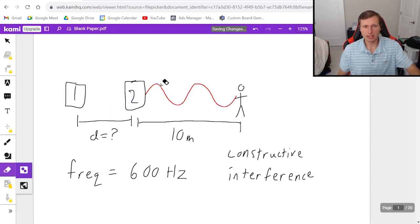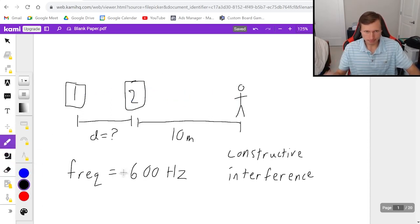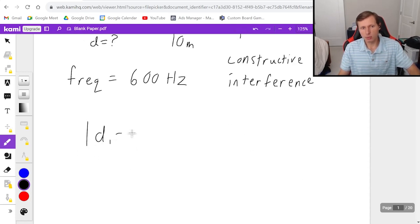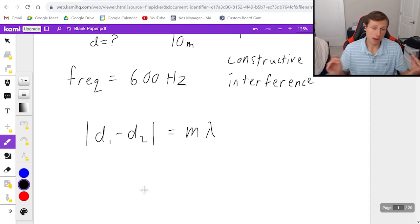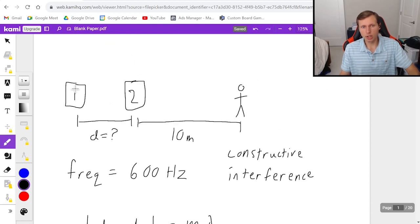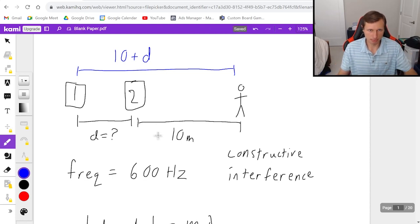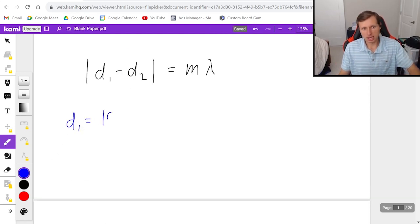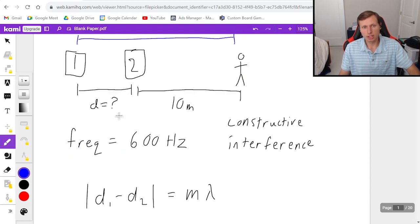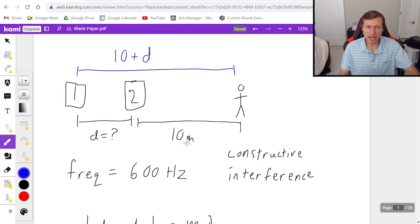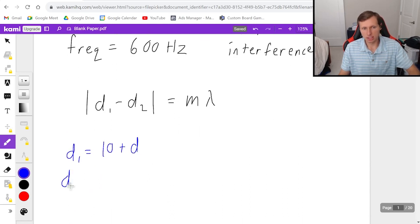And the way we do that, luckily it's really easy. We just use one equation, and that is the absolute value of d1 minus d2 is equal to m times lambda. Now we need to explain what all these variables are. So d1 is the distance from speaker 1 to the person. That distance from here to here, we don't exactly know, but I know it's equivalent to 10 plus d, as you can see from the picture. So d1 equals 10 plus d. d2 is just the distance from speaker 2 to the person. That's 10 meters. So then d2 is just 10.